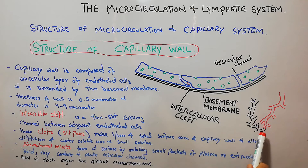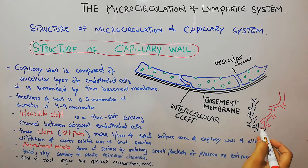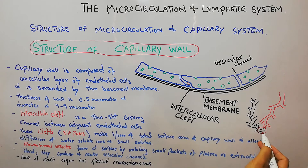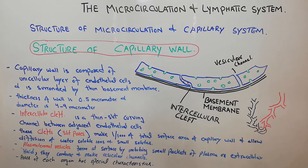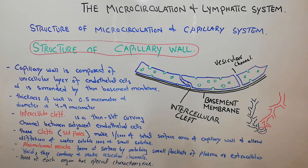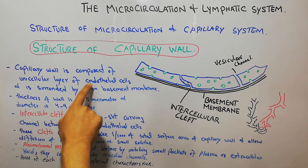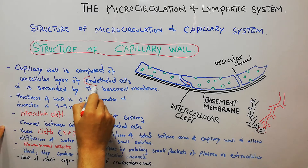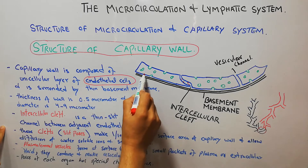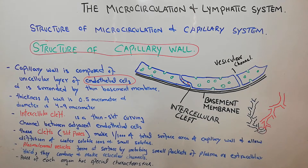Here we have the capillary, and we have enlarged just one wall of it. This is the lumen of the capillary. This wall helps in the diffusion of nutrients, ions, solutes, and also excreta — the waste material. This wall is made of a unicellular layer of endothelial cells: here is one endothelial cell, here is another, and here is another. These endothelial cells are surrounded by a basement membrane.